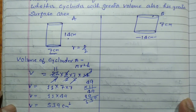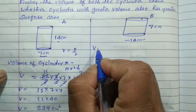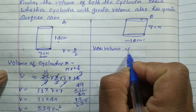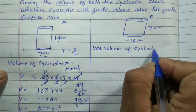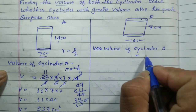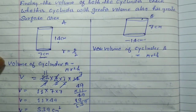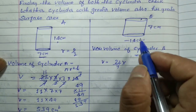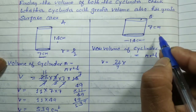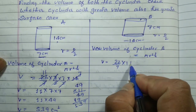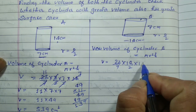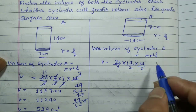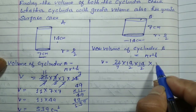Now if we look at the volume of cylinder B — volume of cylinder B is πR²H. Pi = 22/7. Here 14 is the diameter, so R = D/2 = 14/2 = 7. So radius is 7.